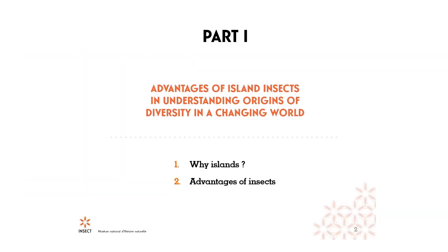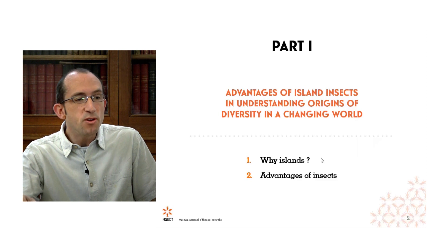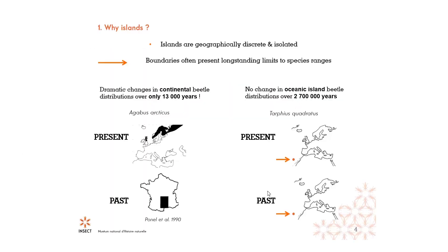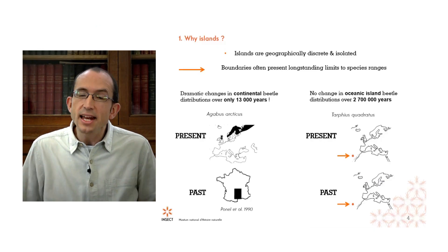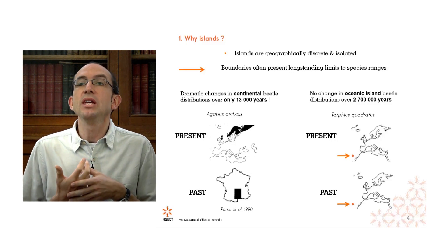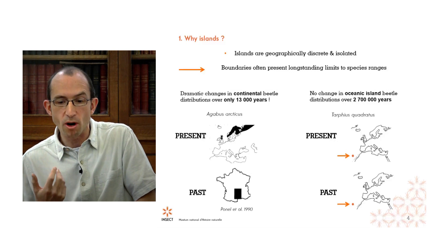To begin with the first part, if we want to understand the role of environmental changes in the origins of diversity, why use islands? And why study insects? You may have heard people saying that islands are like natural laboratories for studying ecology and evolution, which is a nice term, but it's not always clear to people why we consider them to be natural laboratories.